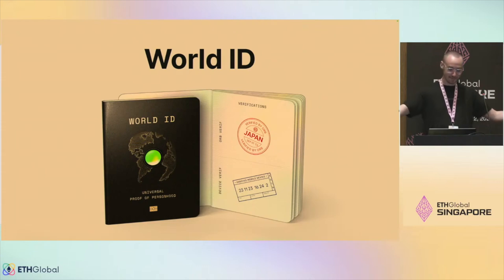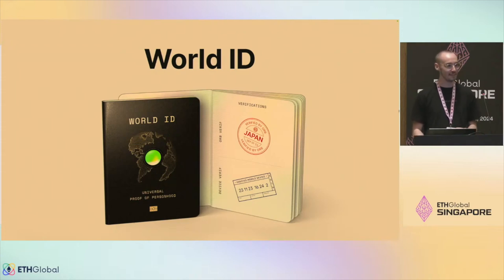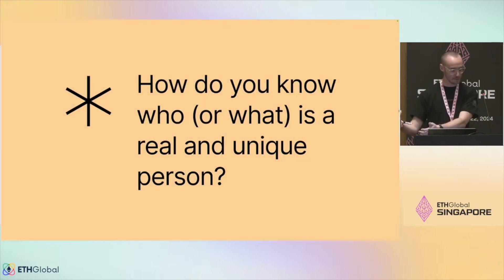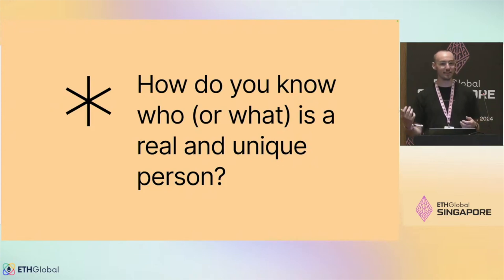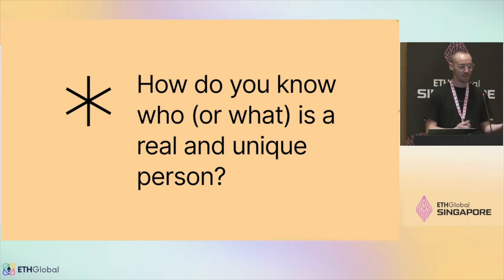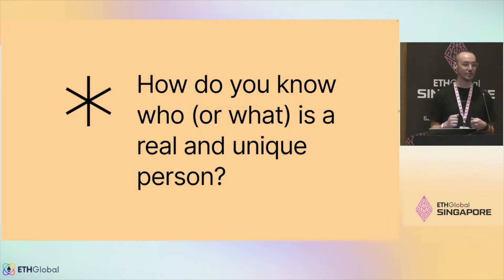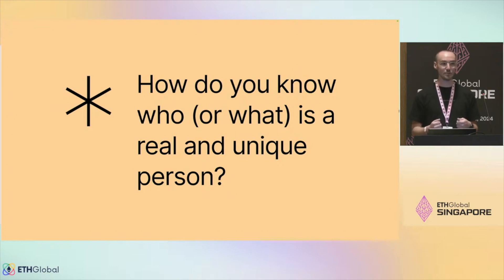WorldID is built to answer a very big, very important question: how do you know who or what is a real and unique person, especially online? AI is getting better and better at pretty much everything. It's getting so good at solving CAPTCHAs that the CAPTCHAs are getting too hard for humans to solve. When CAPTCHAs stop being an effective way to tell humans from bots online, a lot of websites are going to start resorting to things like asking for a photo of your driver's license or your passport, which is bad for your privacy and also bad for accessibility — a lot of people don't have government IDs.